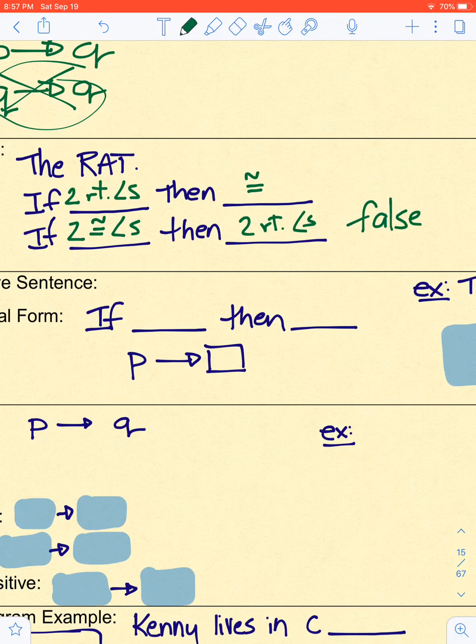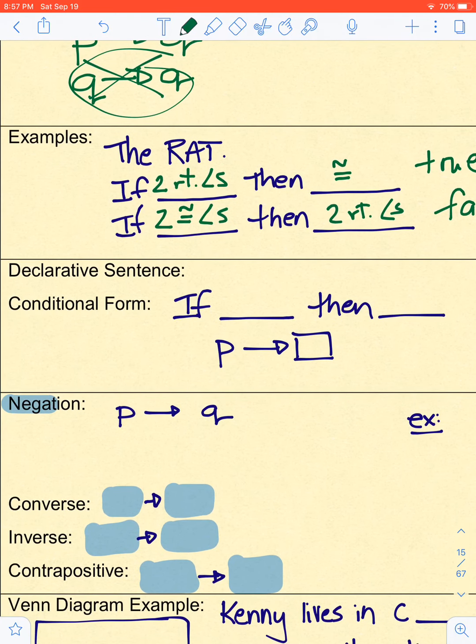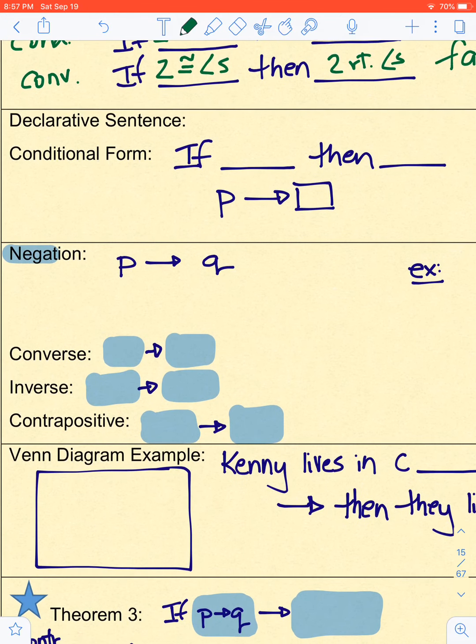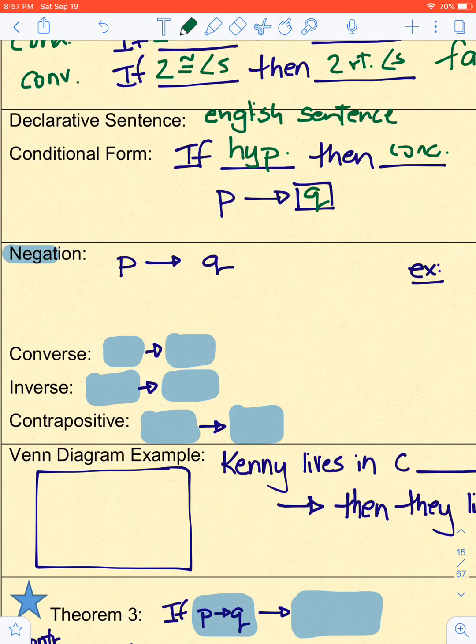All right. The declarative sentence and the conditional form. The declarative sentence is just an English sentence, and it declares something to be true. The conditional form is to rewrite it in this hypothesis conclusion form. And so, we call that form if P then Q. And the hypothesis is the P, and the conclusion is the Q part. So, an example. Two straight angles are right angles. There's an English sentence. Notice there's no if and then in there. It's a declarative statement.